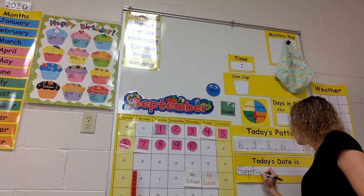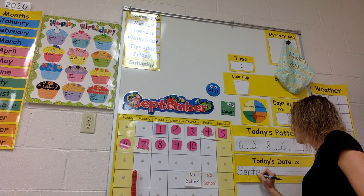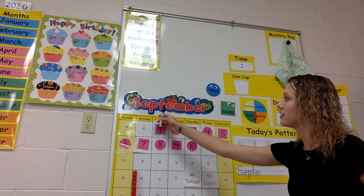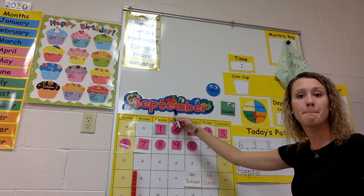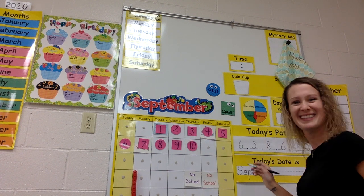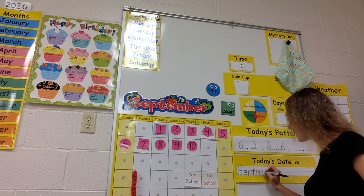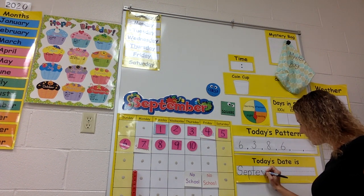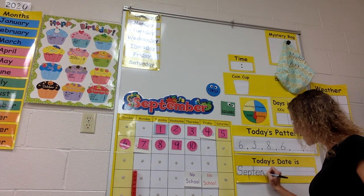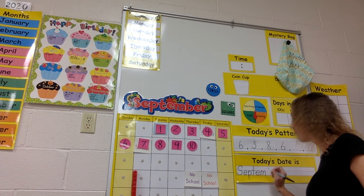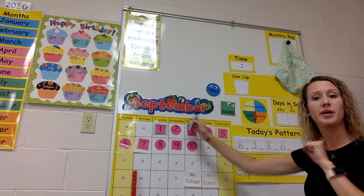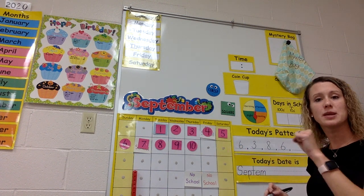E — over, up, around. Then M. The letter M — you've got it. Start at vanilla, down, trace up, bump, trace up, bump. September — what letter says B?